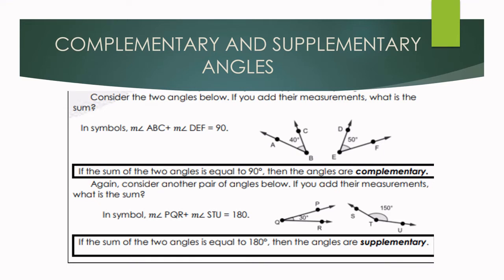How about complementary and supplementary angles? What does it mean? Look at these two angles. We have angle ABC that measures 40 degrees and angle DEF which measures 50 degrees. If you add the measurements, the sum is 90 degrees — that is 40 degrees plus 50 degrees equals 90 degrees. Therefore, these two angles are called complementary angles.